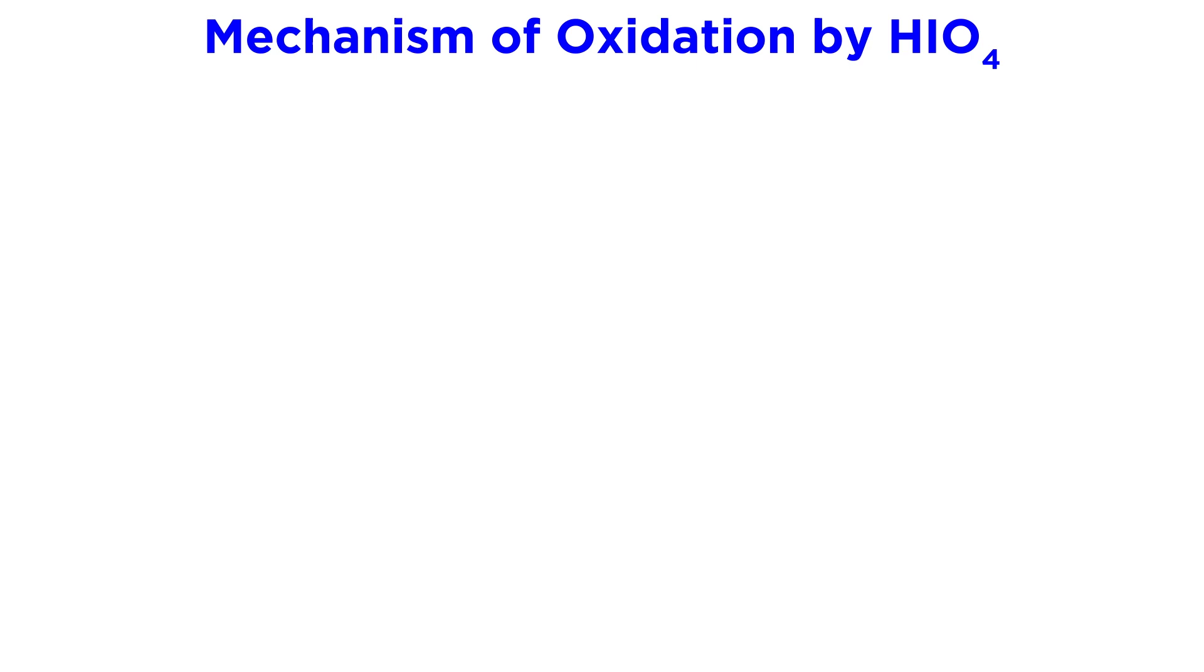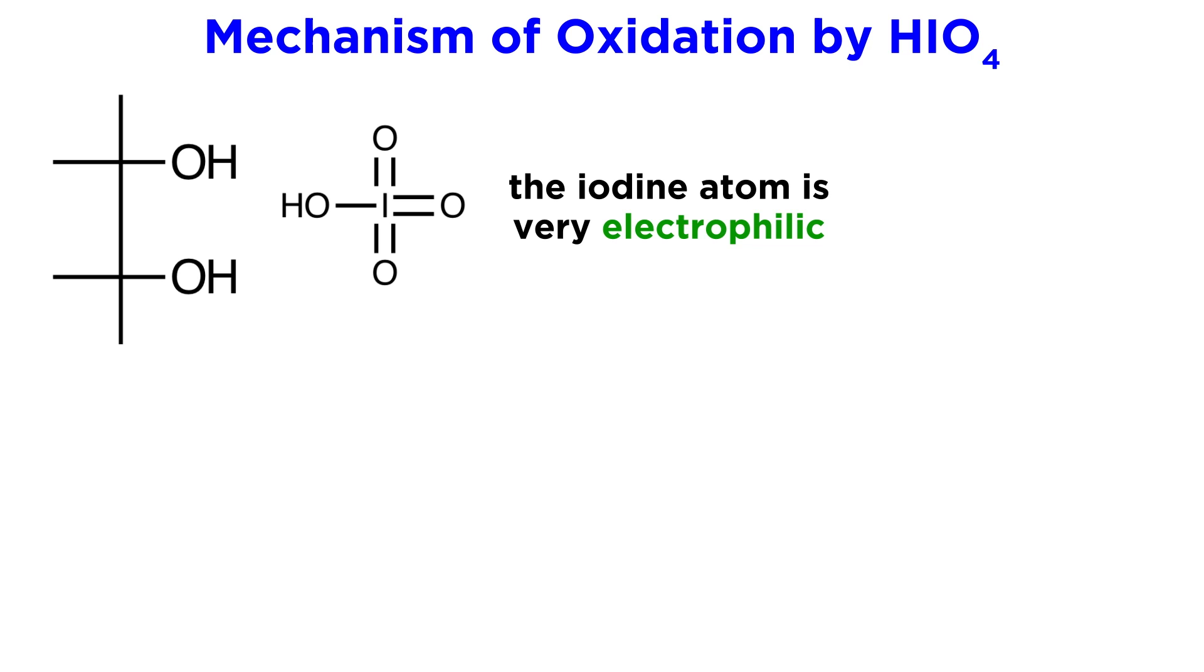Now that we know precisely what kind of transformation will occur on any substrate, let's take a look at the mechanism so that we can understand how this happens. Let's take the generalized example of two adjacent hydroxyls. Given that the iodine atom in periodic acid has seven bonds to oxygen, it is significantly electron deficient, and therefore electrophilic.